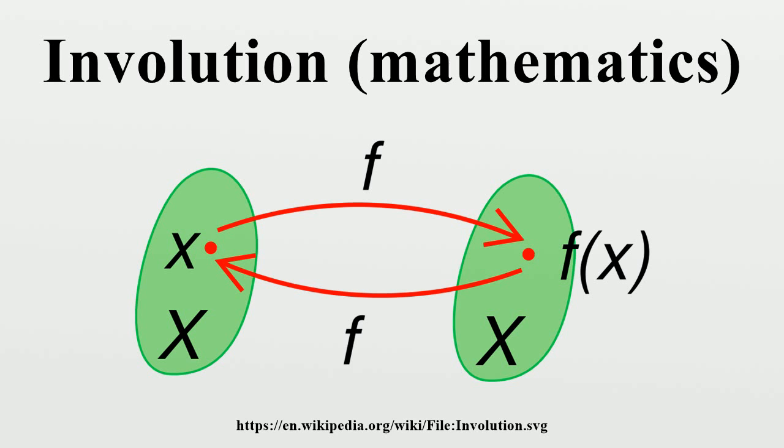Mathematical logic: The operation of complement in Boolean algebras is an involution. Accordingly, negation in classical logic satisfies the law of double negation: not not A is equivalent to A.